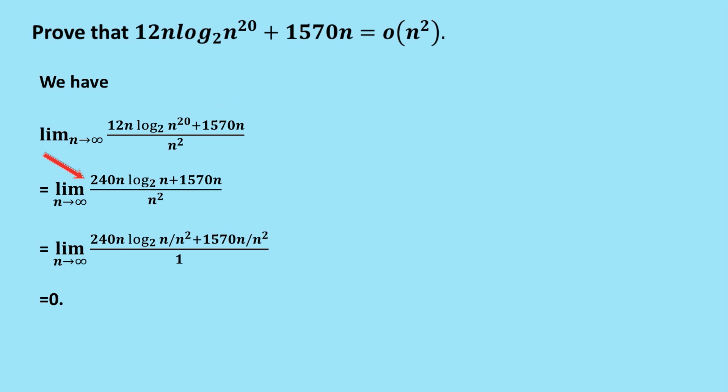Once we do that, once again, let's divide top and bottom by the highest power, which is n^2. Here you do need to recognize that n times log n divided by n^2 will go to 0.